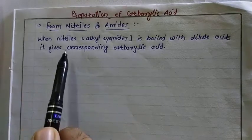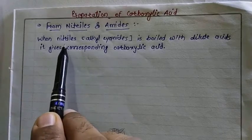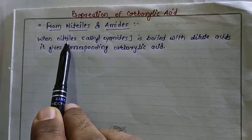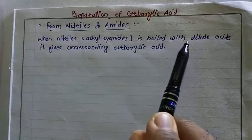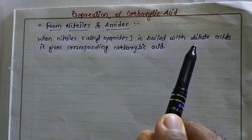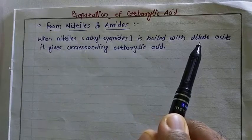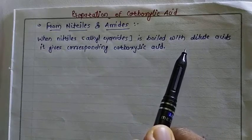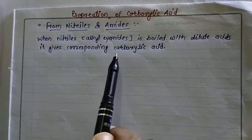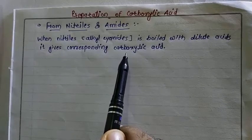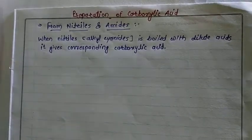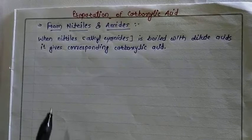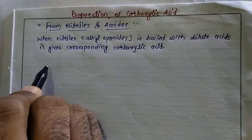The reaction is simple: nitriles react with dilute acid — HCl or H₂SO₄ — to give carboxylic acid. This reaction involves the nitrile group.